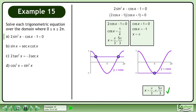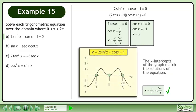Combining the solutions, we have pi over 3, pi, and 5pi over 3. The x-intercepts of the graph match the solutions of the equation.